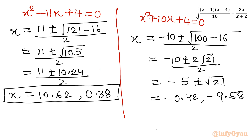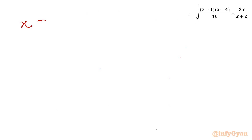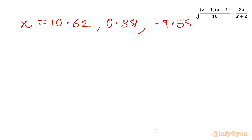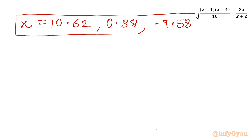Now we check solutions against the exempted intervals: solutions must not lie between 1 and 4, and must not lie between 0 and minus 2. Checking: minus 0.42 lies between 0 and minus 2, so we reject it. The remaining three solutions — approximately 10.62, 0.38, and minus 9.58 — satisfy all conditions and are accepted. So the final solutions of the given radical equation are x ≈ 10.62, x ≈ 0.38, and x ≈ minus 9.58 (these are approximate values to two decimal places).